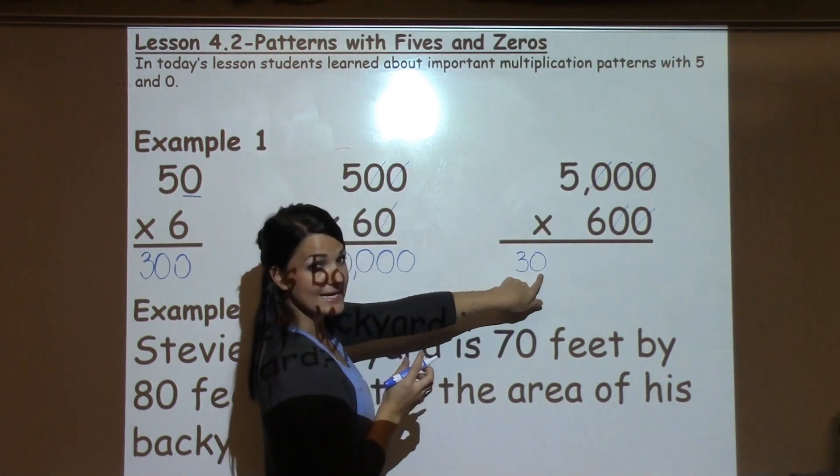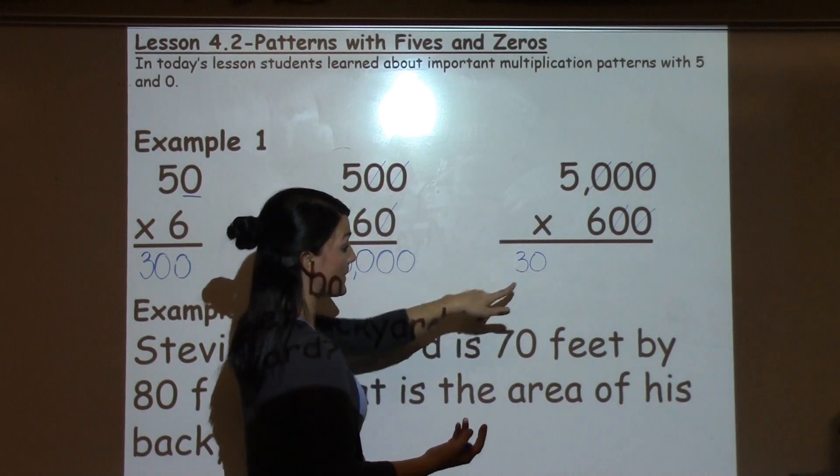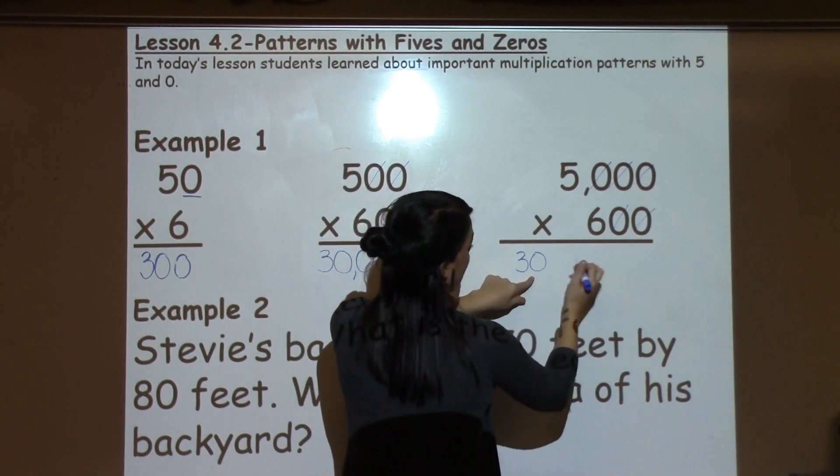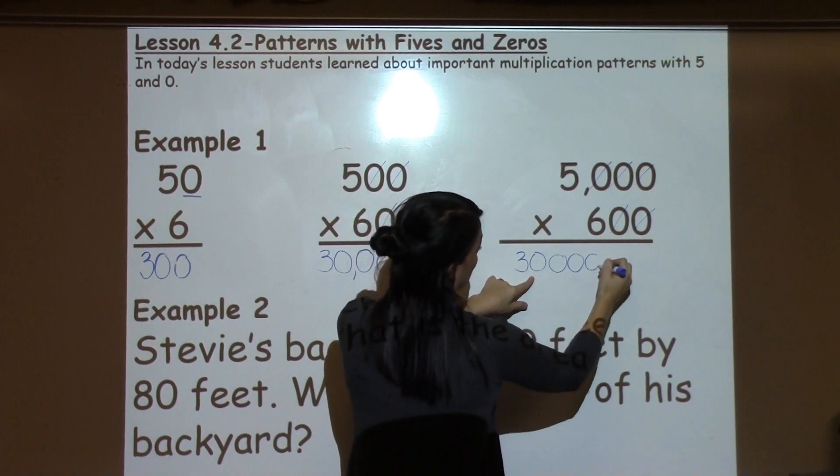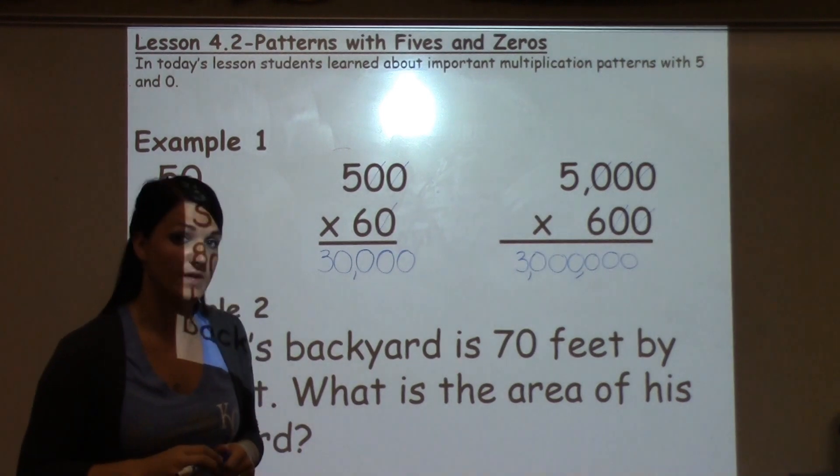This does not count as one of my 0s because 5 times 6 is exactly 30. So I have to include that 0 for this fact. Then I still add on 5 more 0s for a final answer of 3 million.